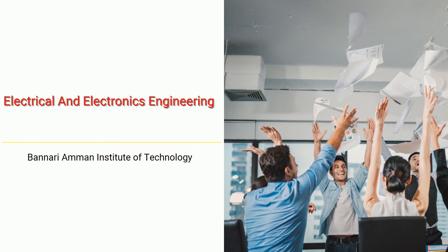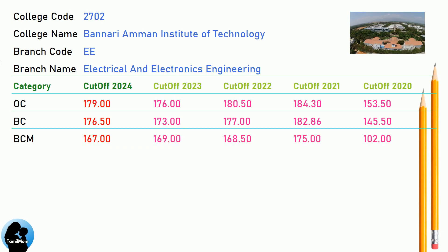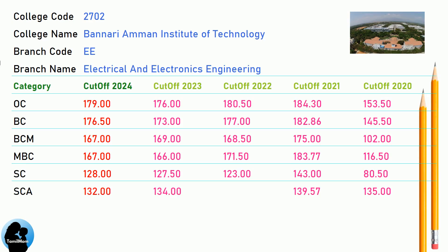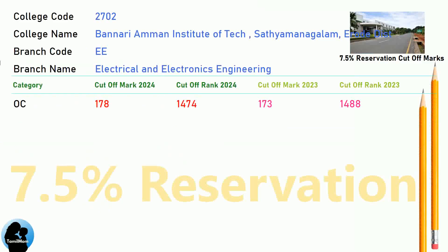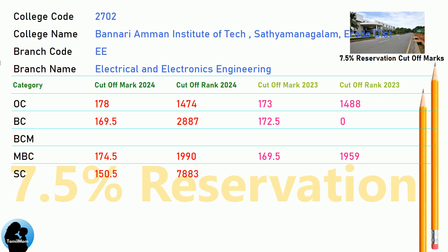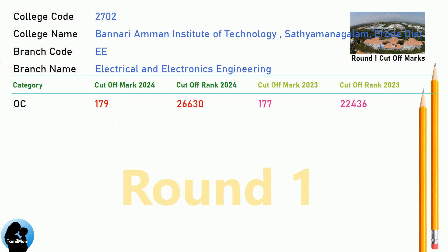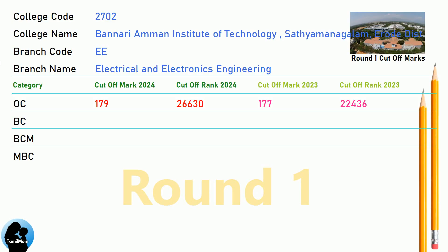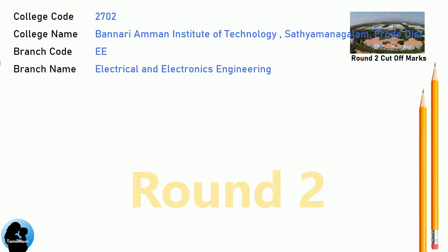DNA Cut-Off for Banari Amman Institute of Technology in Electrical and Electronics Engineering. DNA 7.5 Reservation Cut-Off, Round 1 Cut-Off, and Round 2 Cut-Off for Banari Amman Institute of Technology in Electrical and Electronics Engineering.